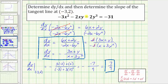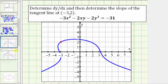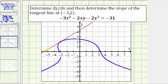Let's verify this graphically. Here's the graph of the curve given by the implicit equation, and here's the point negative three comma two. Because the derivative at that point equals seven-ninths, that is the slope of the red tangent line at the point negative three comma two. I hope you found this helpful.